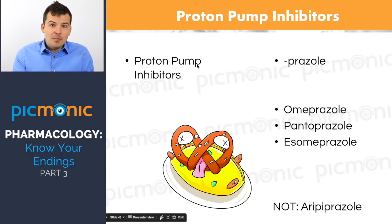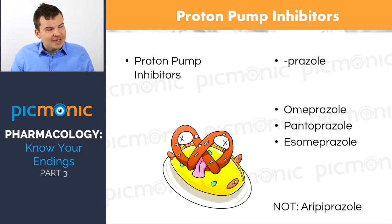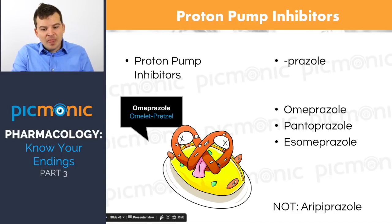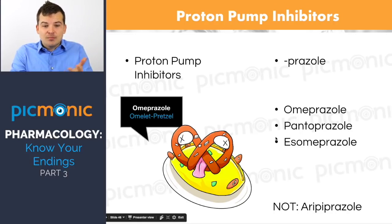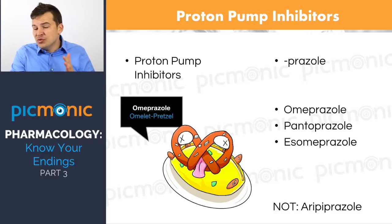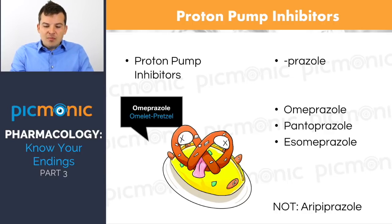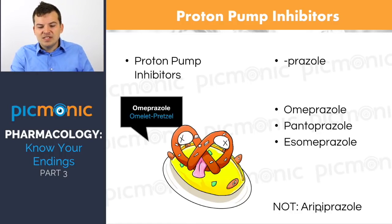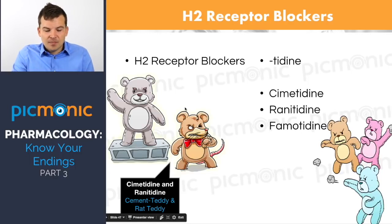Another medication class is PPIs — proton pump inhibitors. Remember when we said azoles for antifungals? Well, omeprazole ends in -azole but is not an antifungal — it's a PPI. We've got our omelet-pretzel Picmonic for omeprazole. Proton pumps create acid in your stomach, so PPIs like omeprazole, pantoprazole, and esomeprazole reduce acid. PPIs work better than H2 receptor blockers. Note: aripiprazole is not a PPI — it's a different medication used for depression.